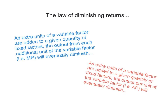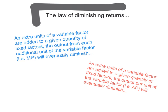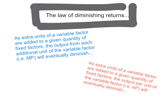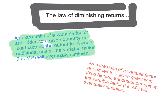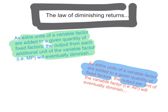This brings us to a very important law when talking about production in the short run: the law of diminishing returns. As extra units of a variable factor are added to a given quantity of fixed factors, the output from each additional unit — the marginal product — will eventually diminish. Similarly, the output per unit of the variable factor — the average product — will eventually diminish. This is the law of diminishing returns.